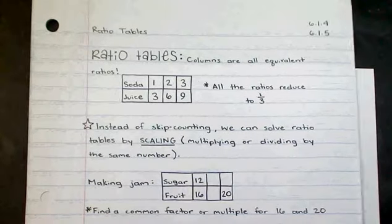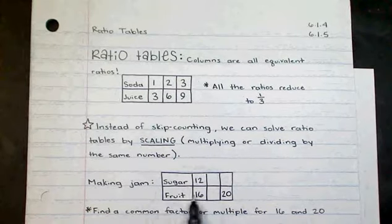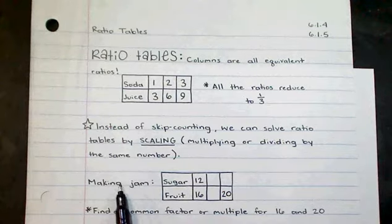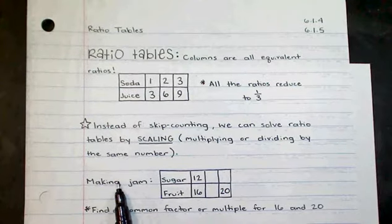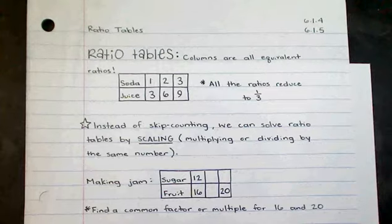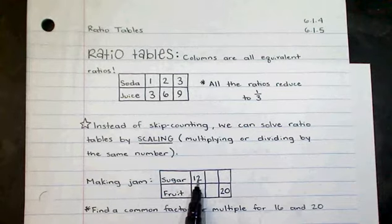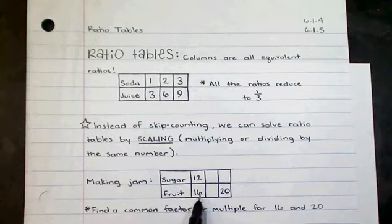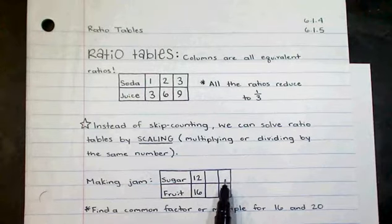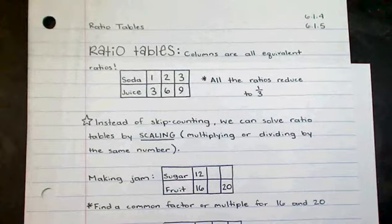Okay, so here, my ratio table. Maybe the word problem is about making jam. And the recipe for jam says 12 cups of sugar are required for 16 pieces of fruit. So what if I have 20 pieces of fruit? How much sugar would I need? So you can use a ratio table to solve for the amount of sugar.